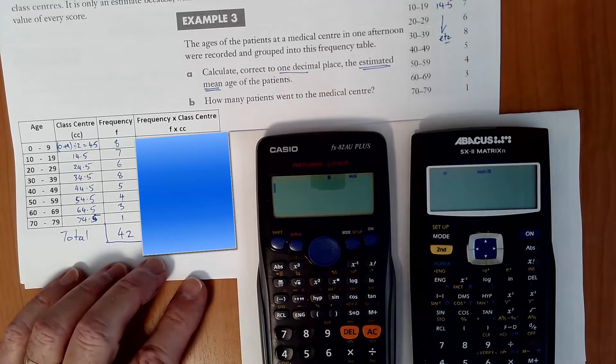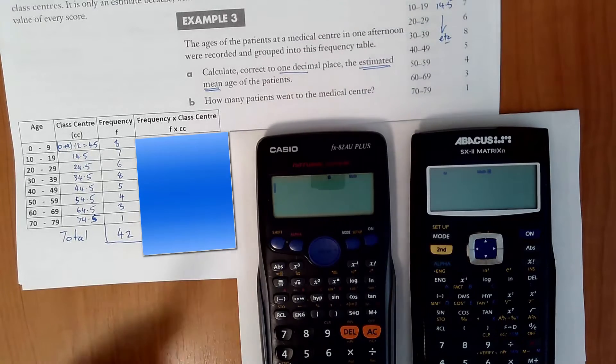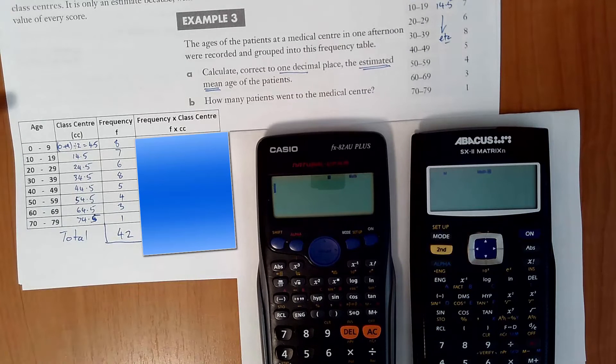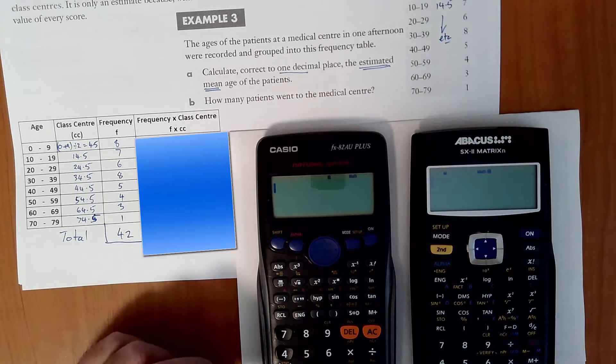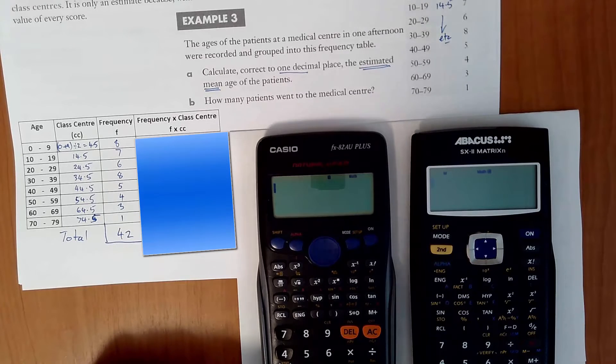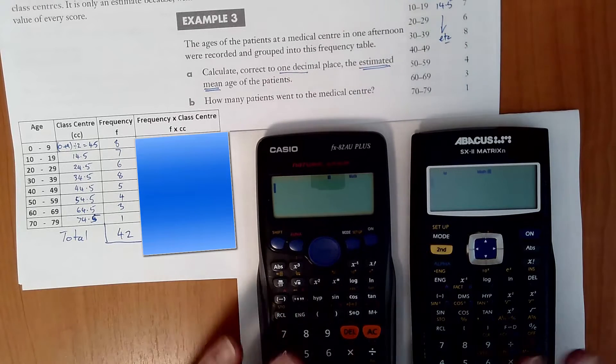Using the statistics mode on our calculator, we're going to estimate the mean from the frequency table that's got grouped data in. So what we're going to do first is set our calculators onto statistics mode.